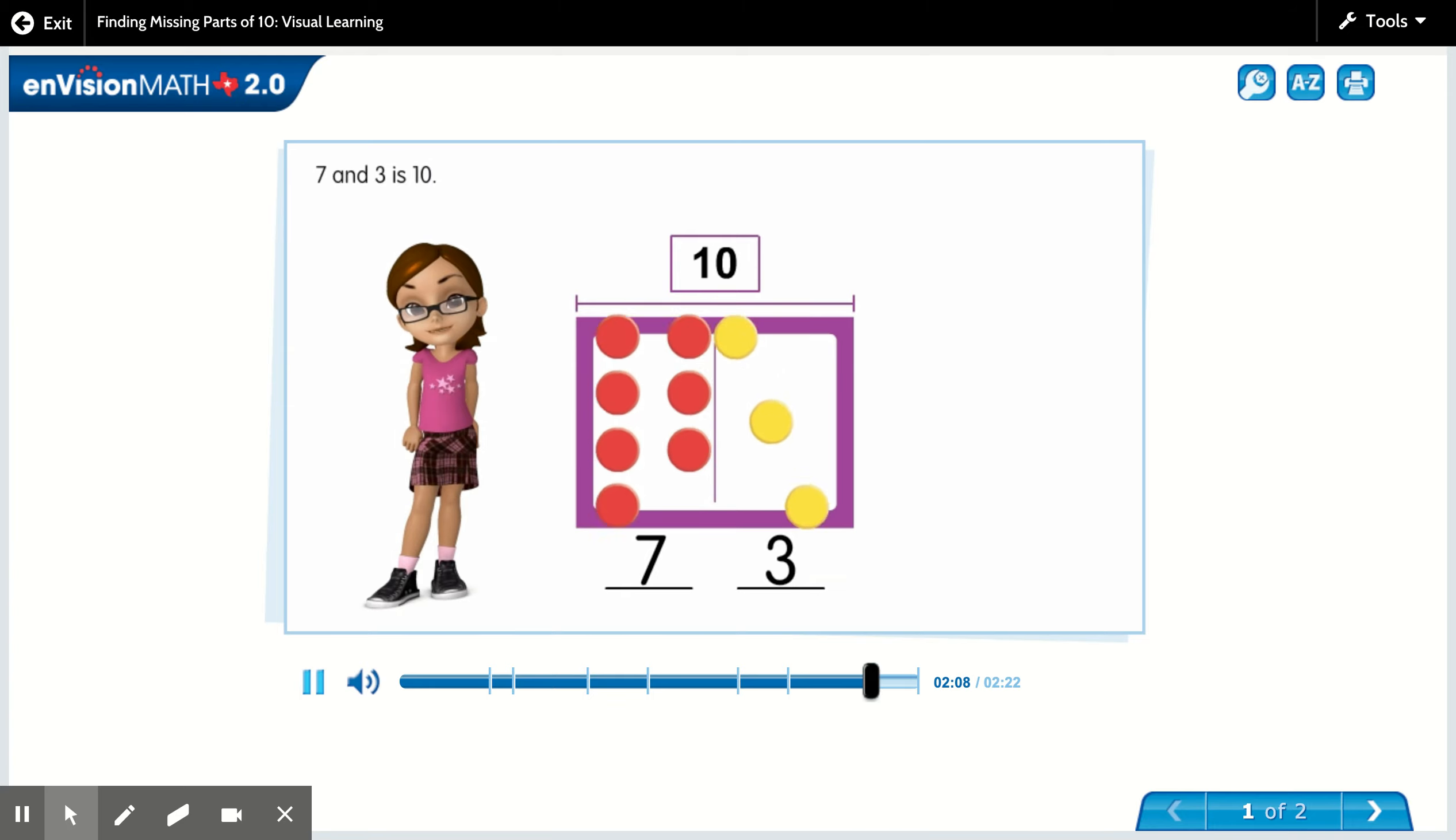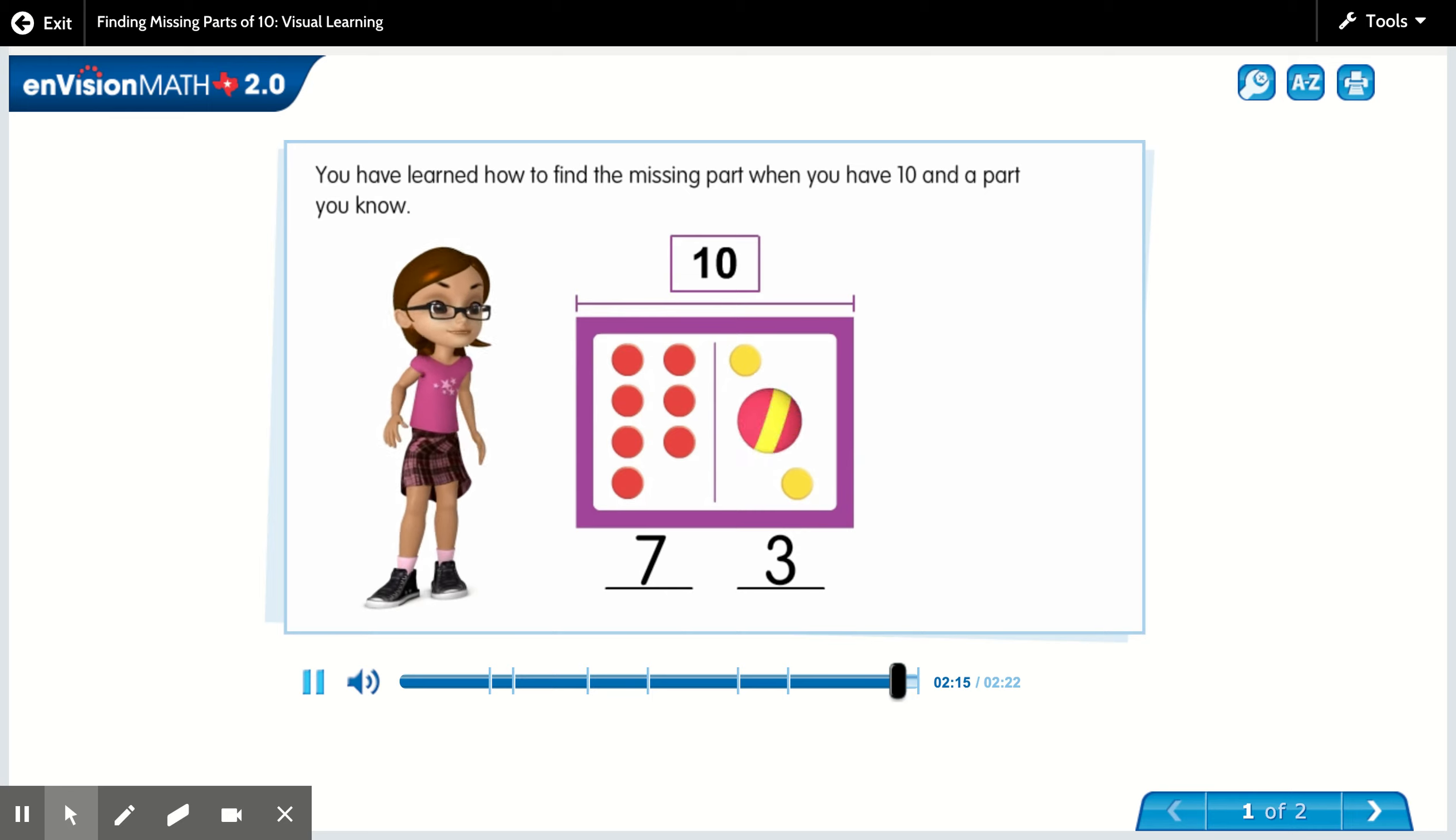Seven and three is ten. You have learned how to find the missing part when you have ten and a part you know.